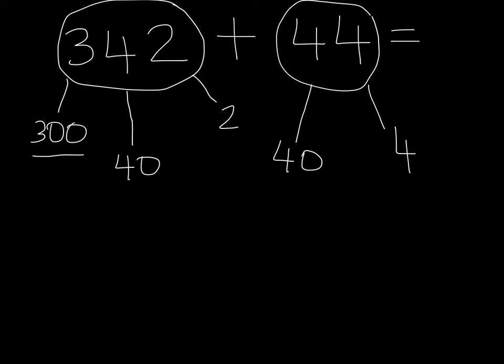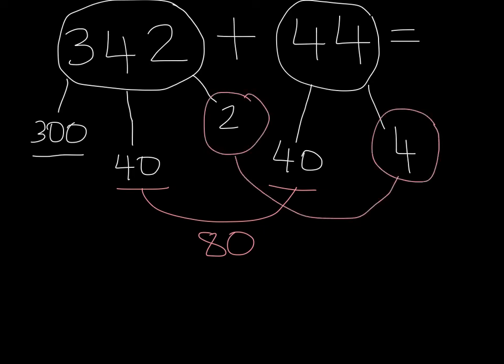Now we need to add the tens. The tens are here: 40 plus 40. 4 plus 4 equals 8, so 40 plus 40 would equal 80. And now we move to our ones: 2 plus 4, which is 6. So now we take our 300 and we add it to our 80, and then we add our 6. 386, and that's our answer.